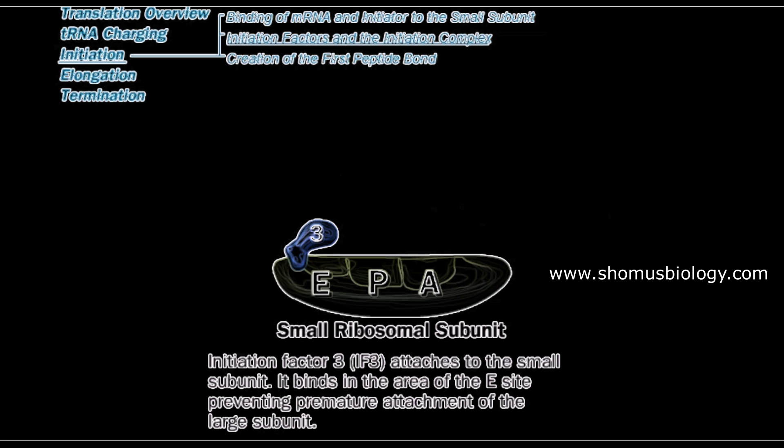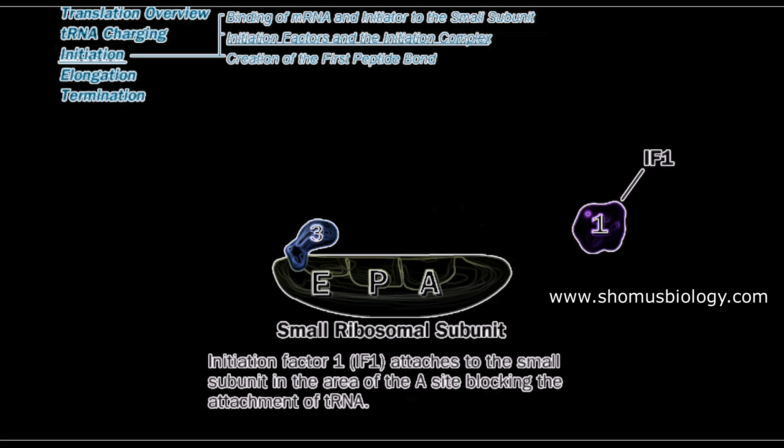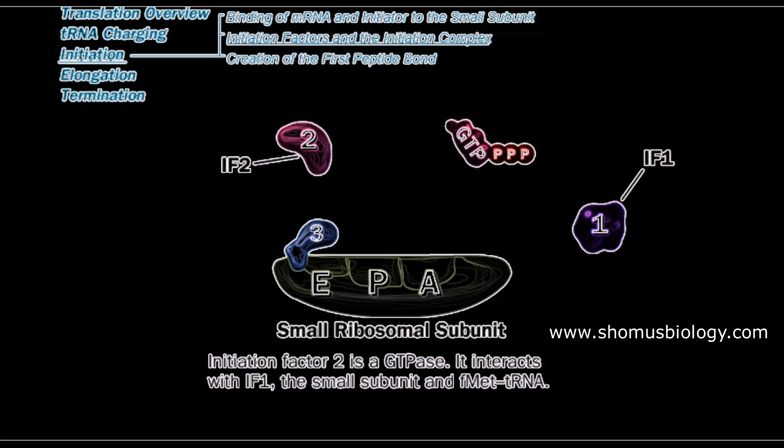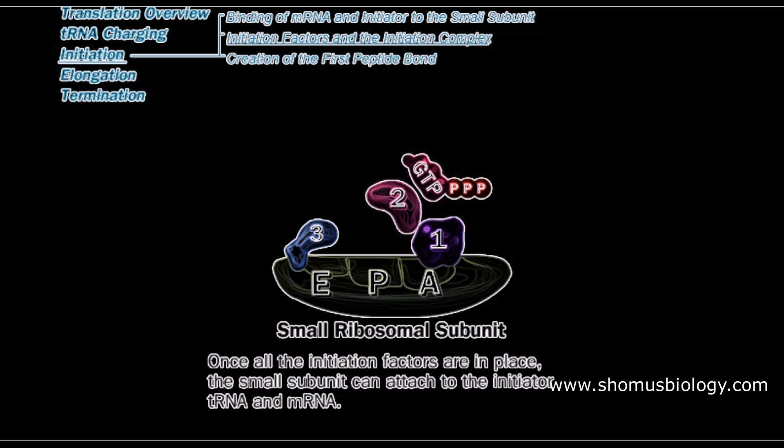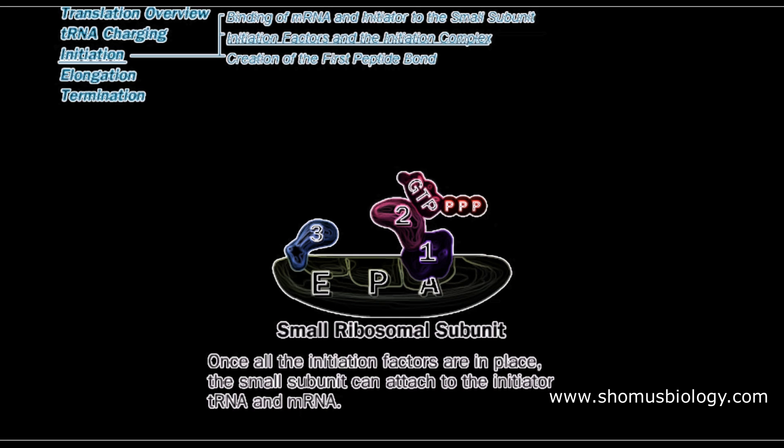Here comes IF1, or initiation factor 1, which attaches to the small subunit in the area of the A site. And this is IF2, initiation factor 2, which is a GTPase. It interacts with IF1, so IF1 and IF2 bring themselves—IF1 sits in the A site.